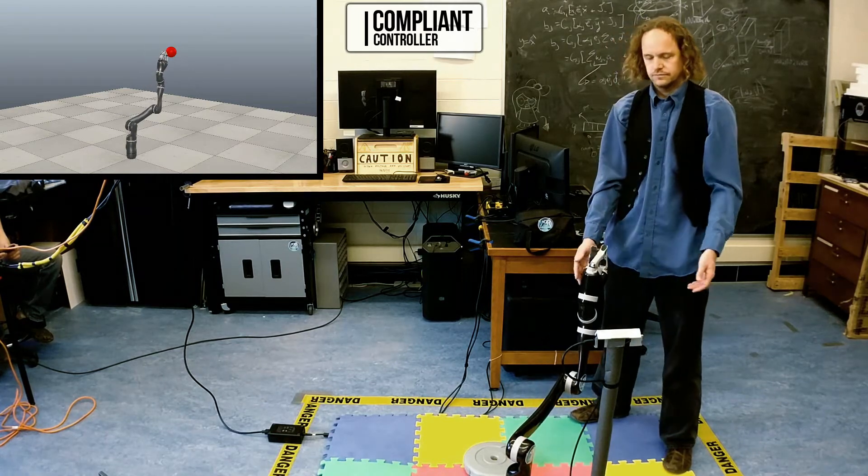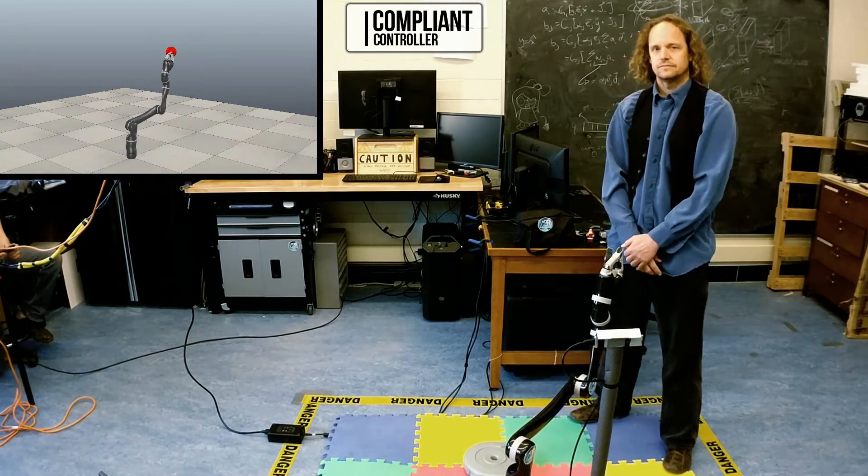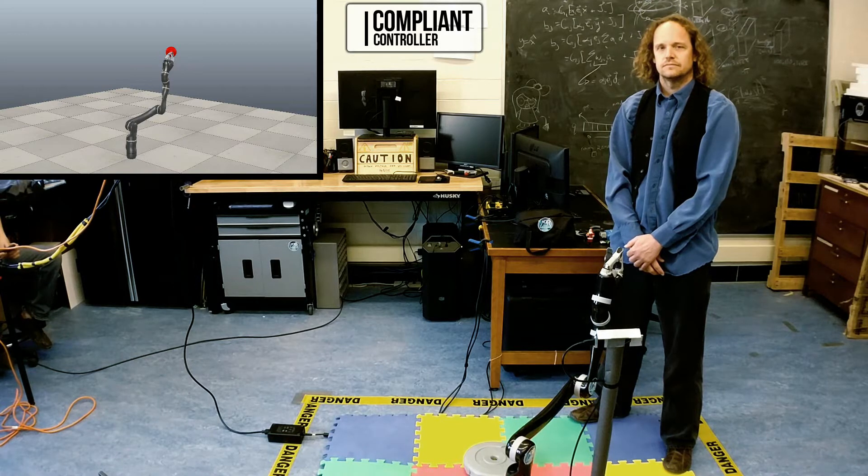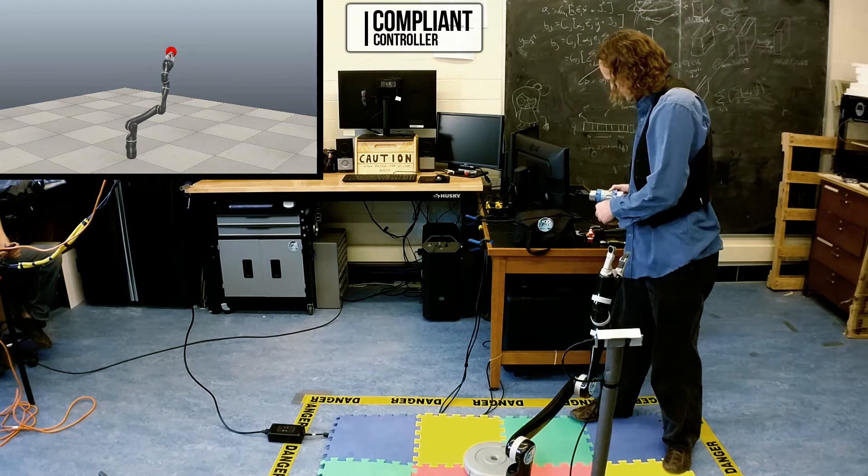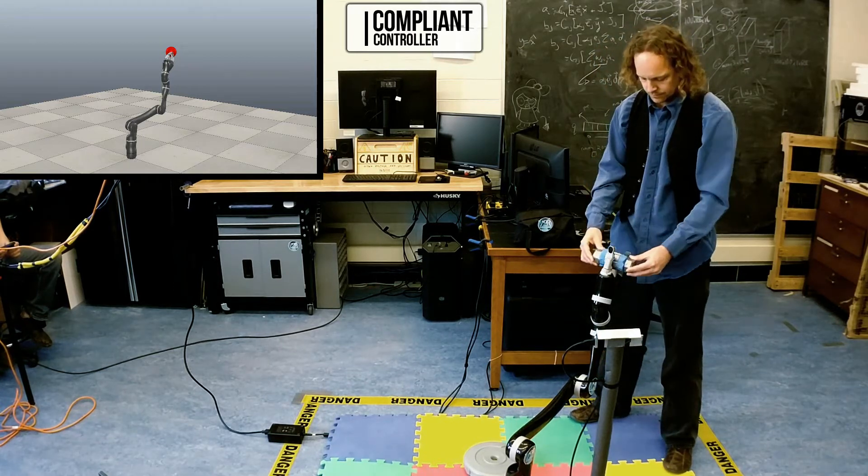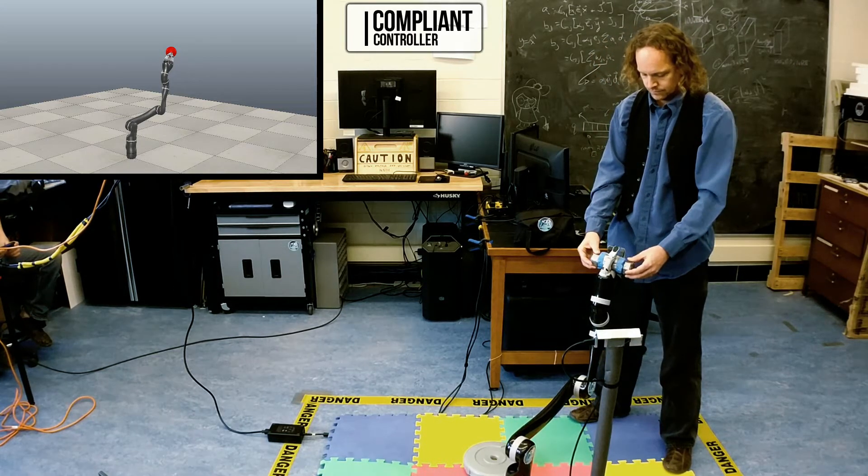However, for standard force control methods, with an unexpected load the controller is no longer effective. Next, we'll give the robot a two pound weight. As you can clearly see, it fails here, and it can't reach the target.